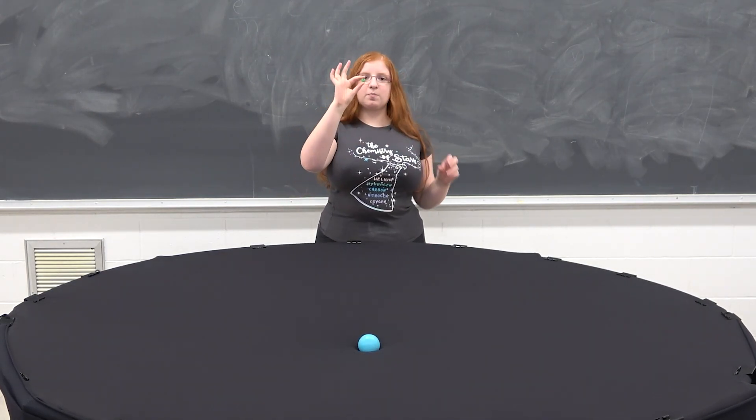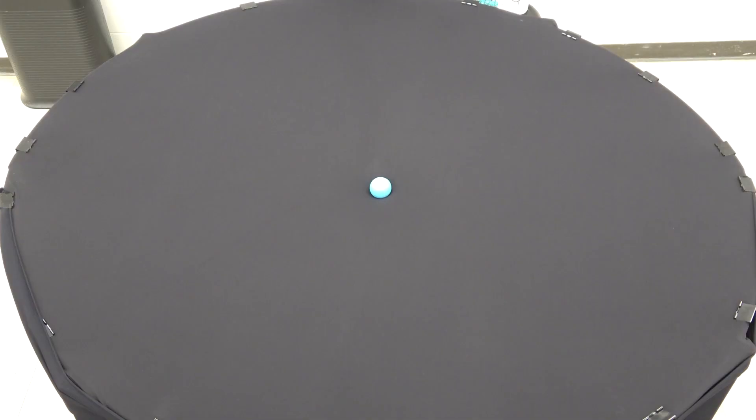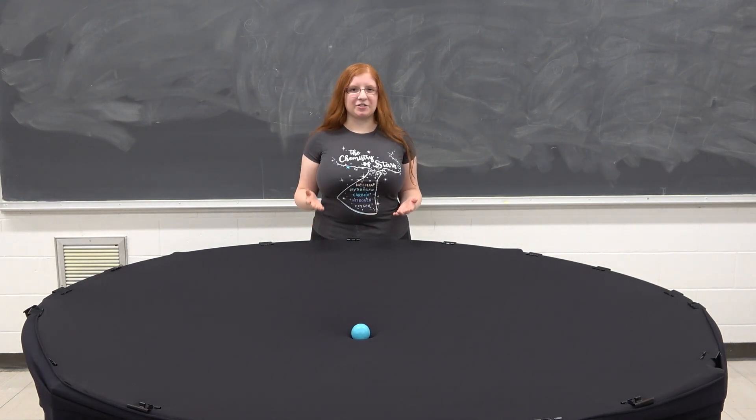And then here I have this marble that we can say is like a planet or an asteroid or some other object. And if I toss it like this, it circles around the star like we see in solar systems. So yes, you can see this creates a very good representation of gravity.